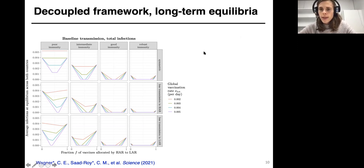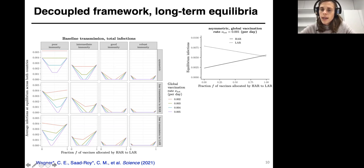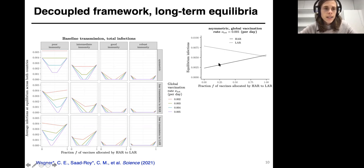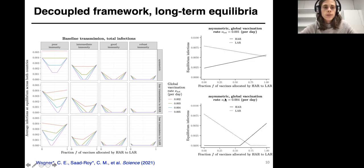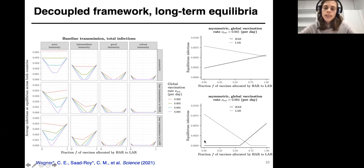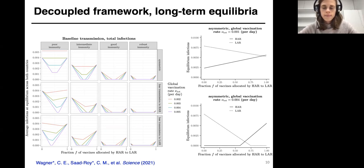To understand why this happens, it's more intuitive to look at equilibrium infections in each region separately. This assumes a case with asymmetric transmission rates and a low vaccination rate. As more vaccinations are allocated to the low access region, this is done at the expense of infections in the high access region — that curve grows up while the other goes down. But once you increase the vaccination rate, this trade-off disappears. There's a large portion where the high access region curve is just flat because they have enough vaccines to maintain herd immunity, so you can share without increasing infections in the giving region.